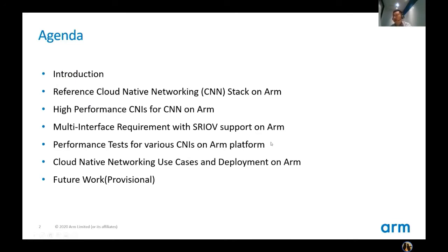Firstly, I would like to give out the agenda for the day. The first item is a brief introduction for today's topic. The second is a reference cloud-native networking stack on ARM. The third is high-performance container networking interfaces for cloud-native networking on ARM. The fourth is the multi-interface requirement with SR-IOV support on ARM. The fifth is performance test results for various container networking interfaces on ARM. The sixth is cloud-native networking use cases and deployment on ARM. And the last is our future work.